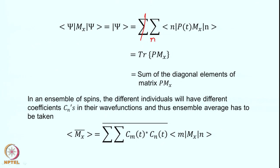This is the trace of the matrix P(t)·m_x — the sum of the diagonal elements of the matrix P·m_x.